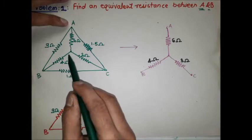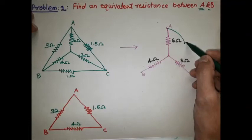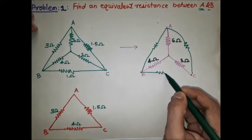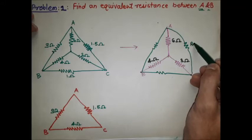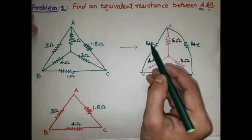First, we are converting the inner star network into a delta network. The inner star network has terminals A, B, and C. We need to convert it from star to delta, finding RAC (connected between A and C), RBC, and RAB in the delta network.